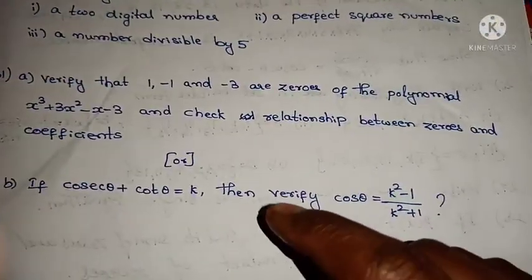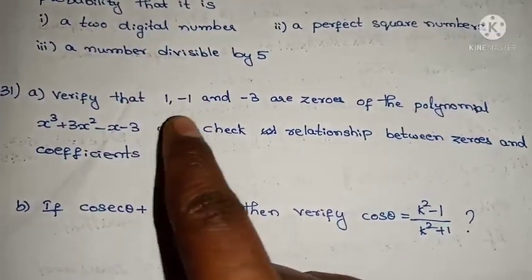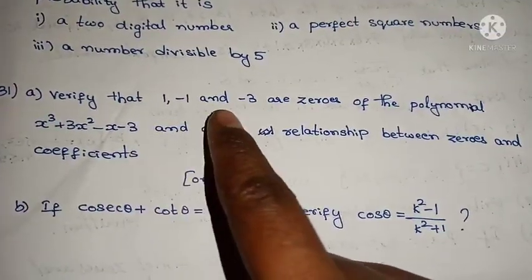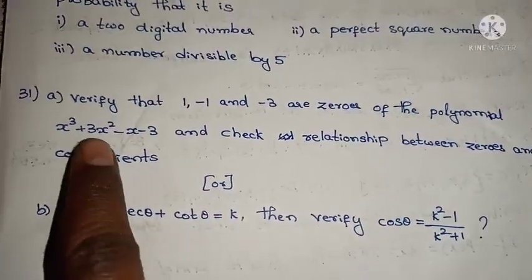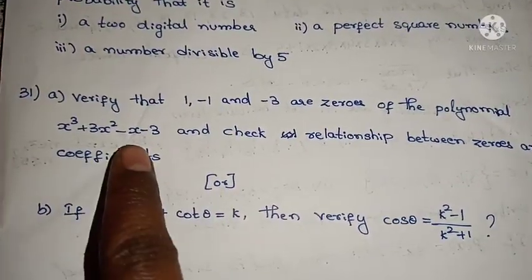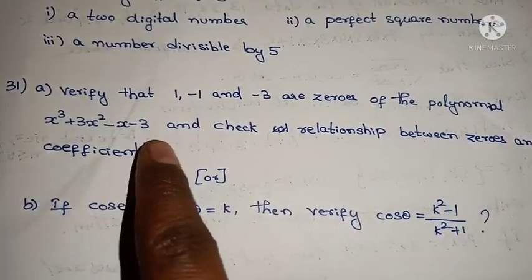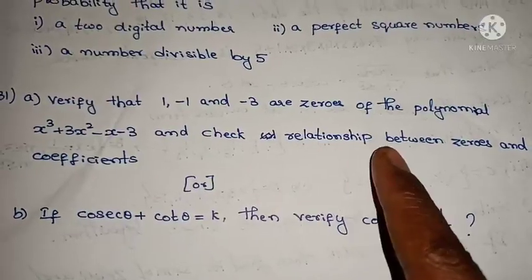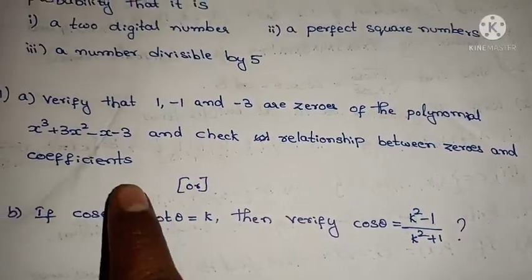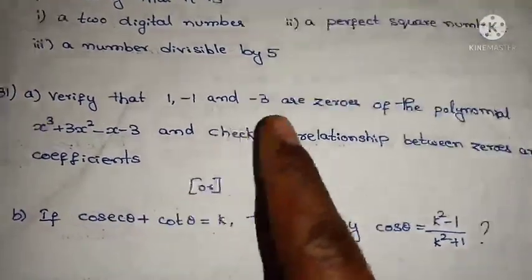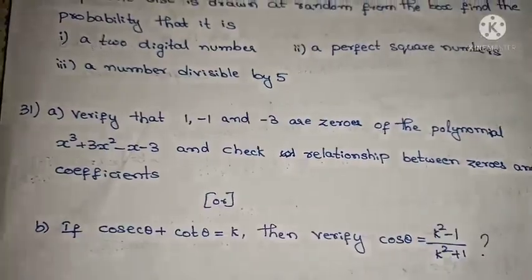31st question, part A: Verify that 1, -1, and -3 are the zeros of the polynomial x³ + 3x² - x - 3, and check the relationship between zeros and coefficients. This is an example problem from the textbook.